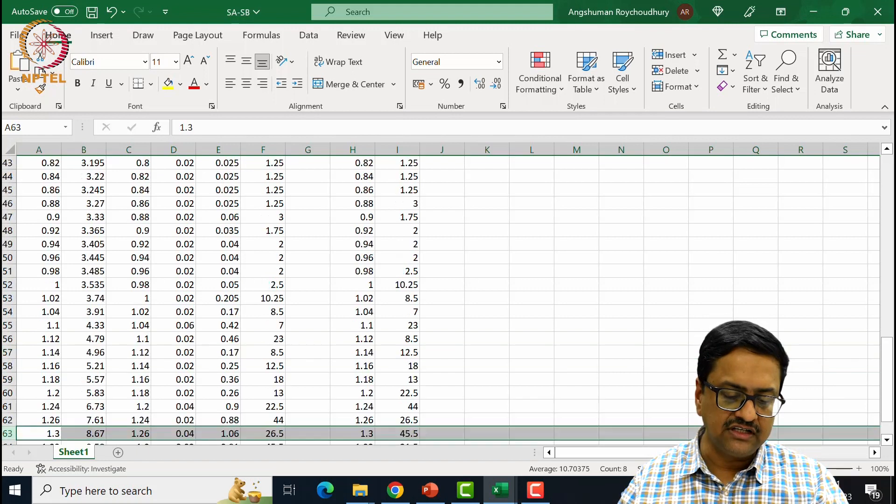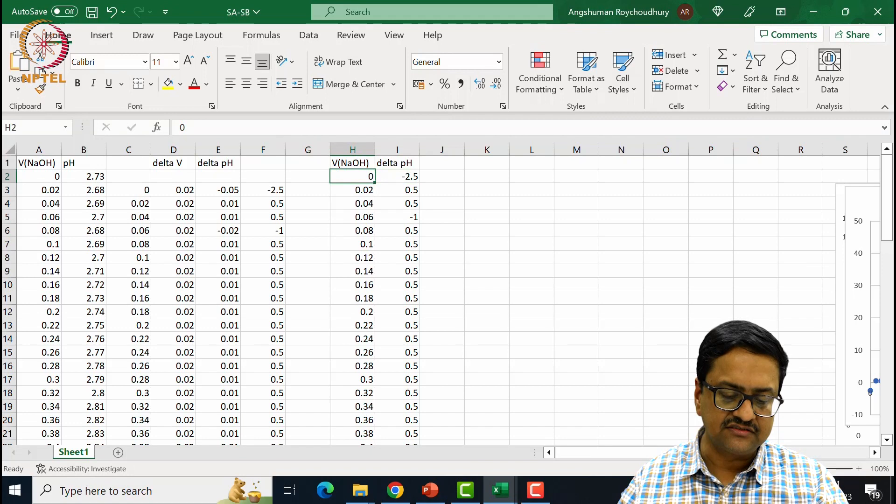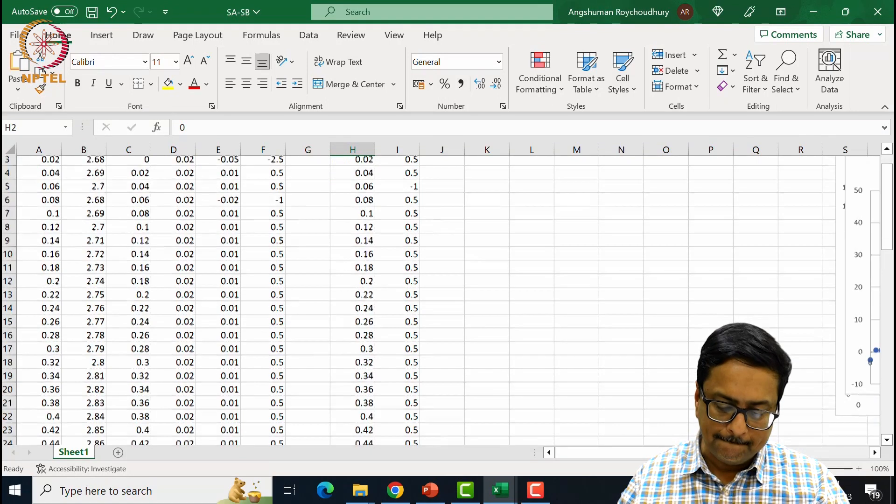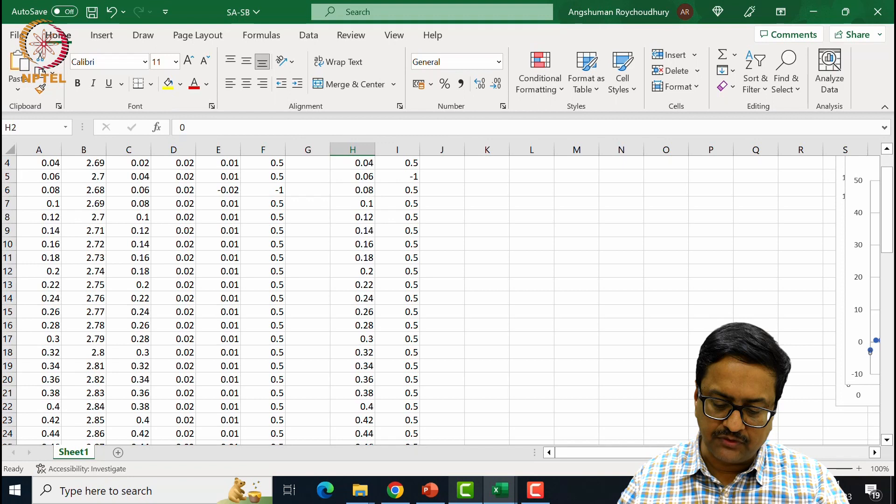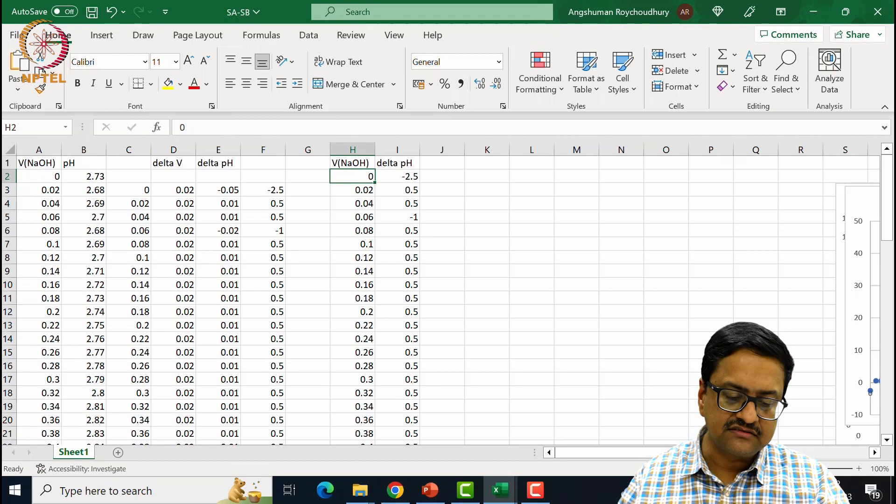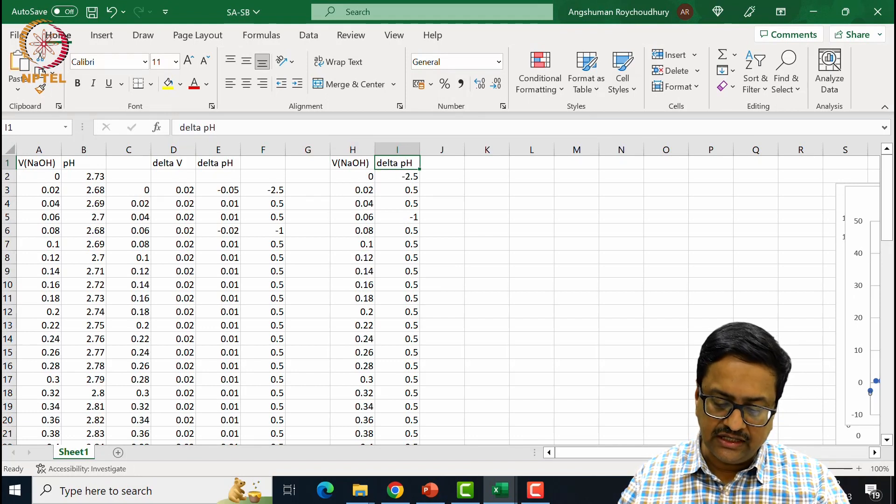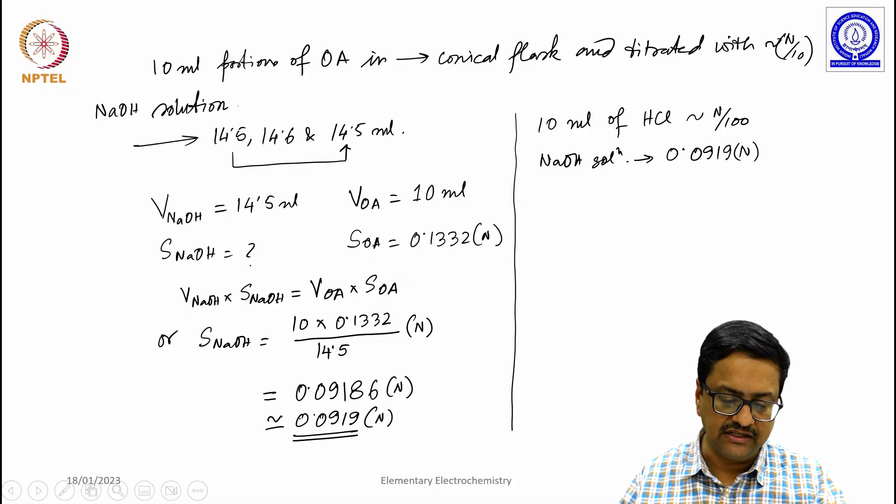So when we try to plot this, these values of delta pH versus V NaOH, what we get is a plot. If you try to plot this V versus delta pH, what we get is a plot that I am going to show in the next slide.